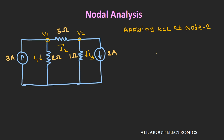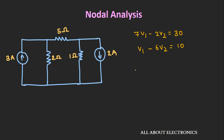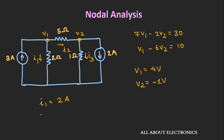Similarly, applying KCL at node number 2, we can write I3 plus 2 is equal to I2. We can write I3 as V2 by 1 and I2 as V1 minus V2 divided by 5. If we simplify, we get V1 minus 6V2 is equal to 10 — equation number 2. Solving these two equations, we get V1 as 4V and V2 as minus 1V. Applying Ohm's law, we get current I1 as 2A, I2 as 1A, and I3 as minus 1A.